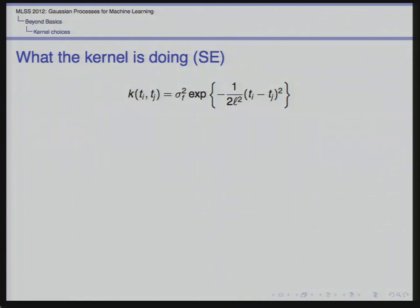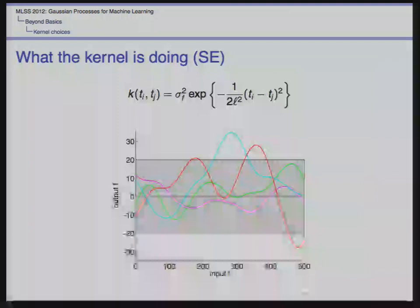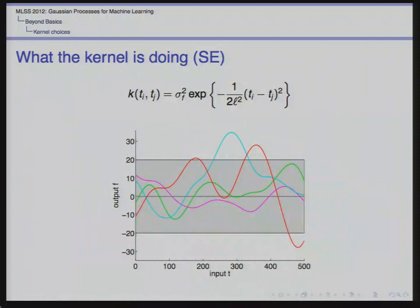Let's start with kernel choices. The Gaussian process gives us a nice probability distribution over functions, and what the kernel does is determine what kind of functions we get from that prior — what type of functions we're drawing. The squared exponential kernel is canonical for drawing smooth functions from a GP. It's infinitely differentiable.